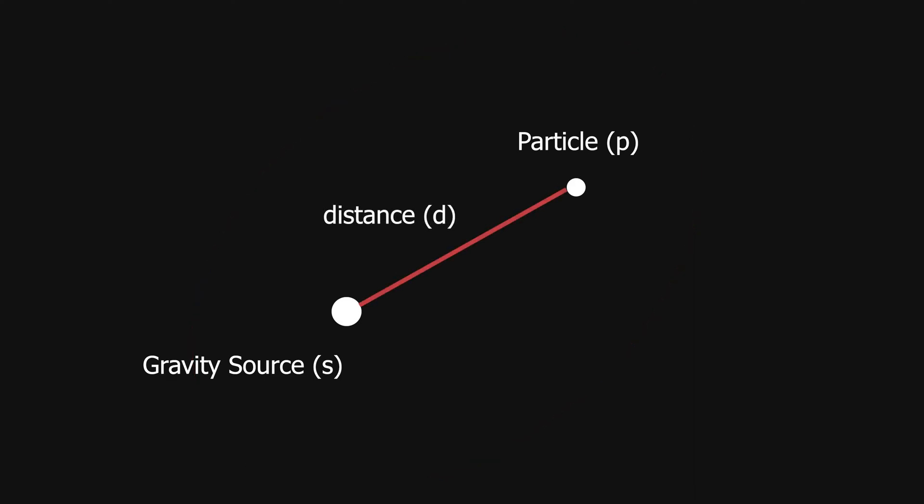We need the true distance between them, and to do that we're going to start with the X distance and the Y distance. Then we'll use Pythagorean theorem to figure out what the hypotenuse side length is. The X and Y distances are also going to be useful for some other things, so let's go ahead and figure those out.